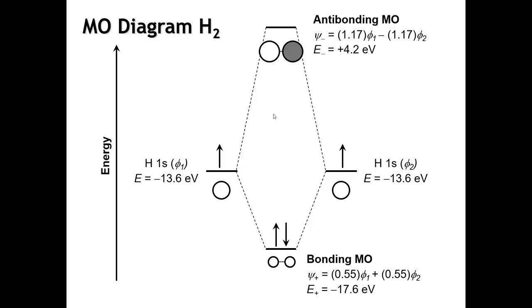So it's never going to be favorable to fill both the bonding and the anti-bonding MO — if we filled both, it would be more stable not to form a molecule at all.